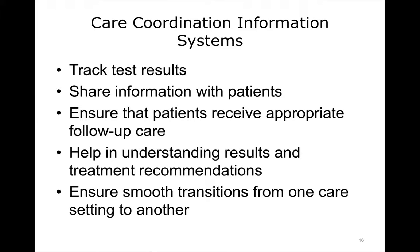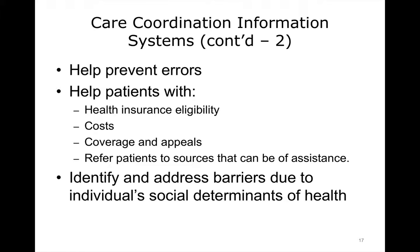Care coordination systems track test results, share information with patients, and ensure that patients receive appropriate follow-up care and help in understanding results and treatment recommendations. These systems also ensure smooth transitions by assisting patients and families as the patient moves from one care setting to another, such as from hospital to home. They help prevent errors when multiple clinicians, hospitals, or other providers are caring for the same patient, using tools such as medication reconciliation and shared medical records. Systems also help patients with health insurance eligibility, costs, coverage, and appeals, and can identify and address barriers or needs due to individuals' social determinants of health.